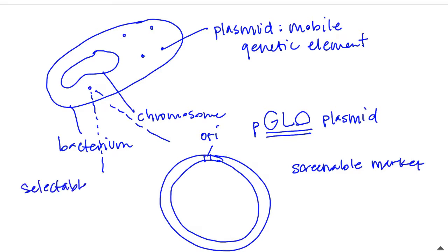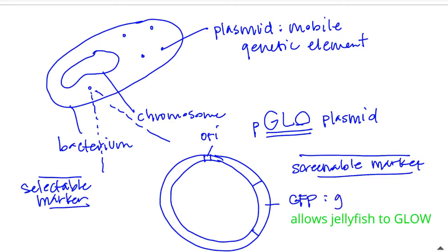Let's talk about the selectable marker. Now, the screenable marker, the interesting thing about the screenable marker is it's actually taken from a eukaryotic cell, but the selectable marker is taken from a prokaryotic cell. Let's talk about the screenable marker first. The screenable marker is a gene that allows jellyfish to glow. It's called GFP,